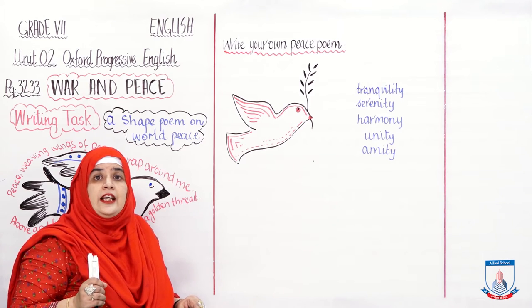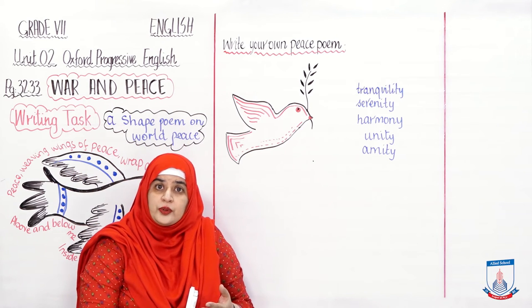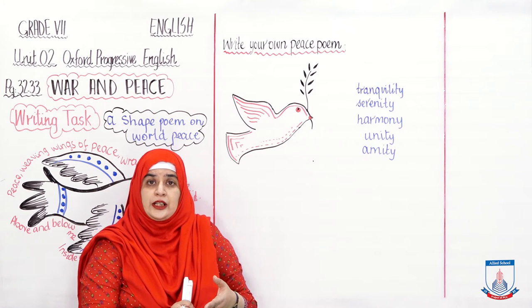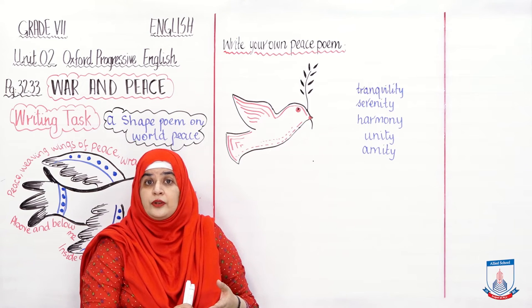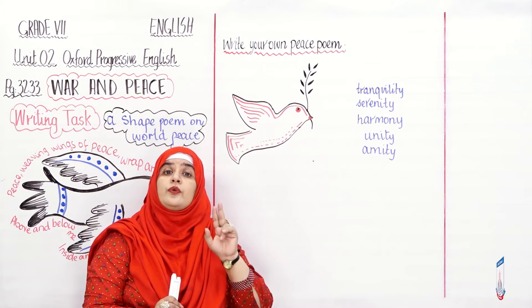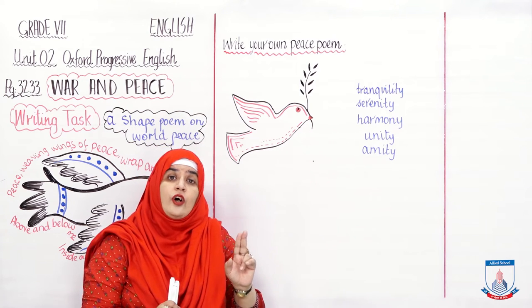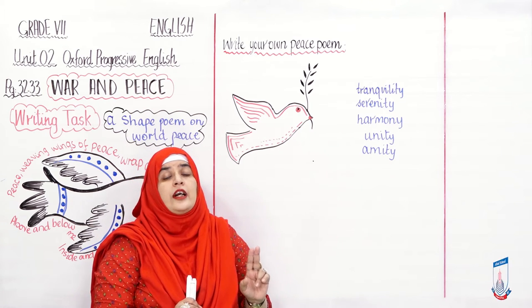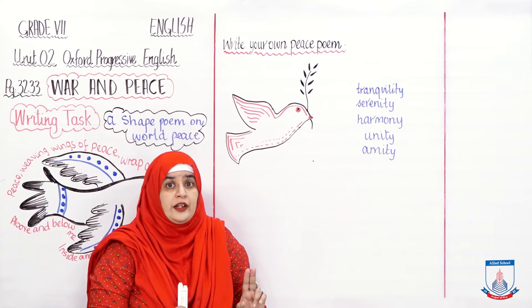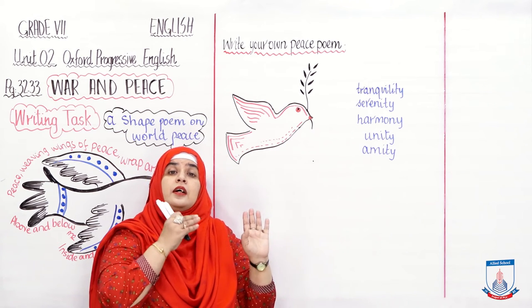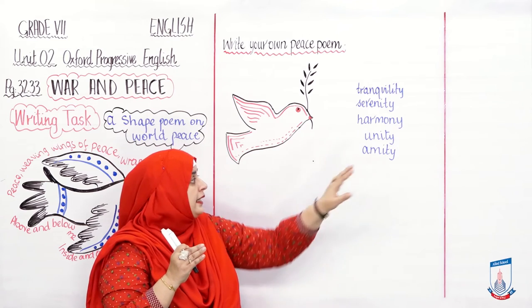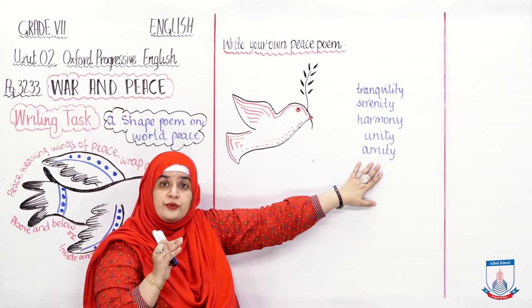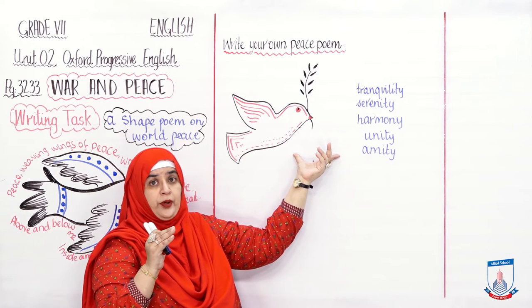Woh yeh keh rahe hain ke aapne iske andar figurative language use karni hai — metaphors use karne hain, similes use karni hain. Metaphors aur similes kya hoti hain? Jab aap do cheezon ko compare karen 'like' aur 'as' daal ke, toh woh similes hoti hain. Aur without using 'like' aur 'as,' toh woh metaphors hoti hain. Toh is specific poem mein jo aapko likhni hai, yeh word bank use karke, similes aur metaphors use karke, ek dove draw karke — shape poem.